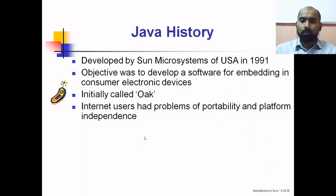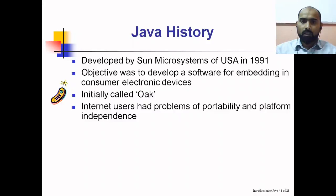At the same time Java emerged, there was another technology taking shape — the World Wide Web. WWW came onto the internet in the year 1993. The problem with the web at that time was portability. There were thousands of computers connected to the internet sharing resources like programs and files, but a program written for one platform may not execute on another platform. This issue is called portability.